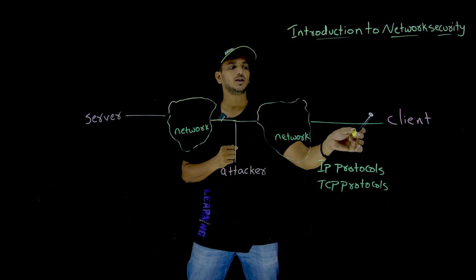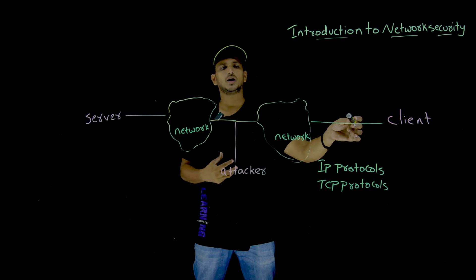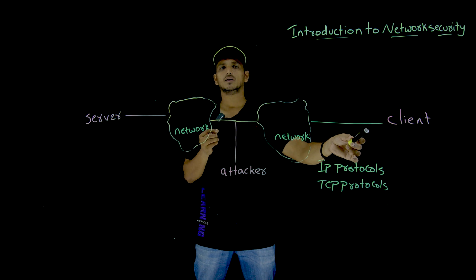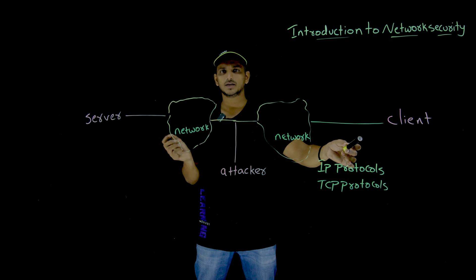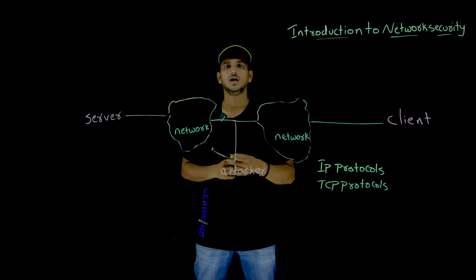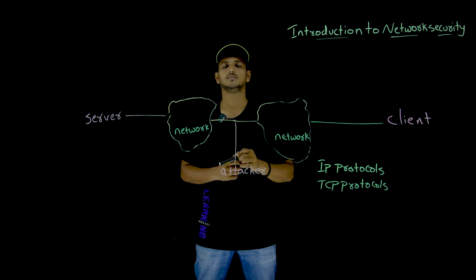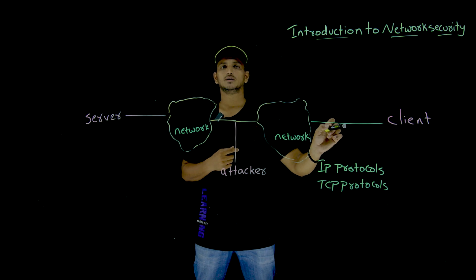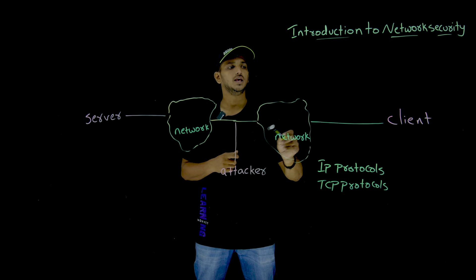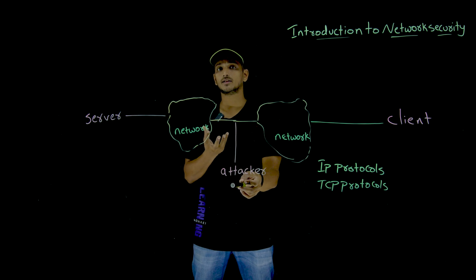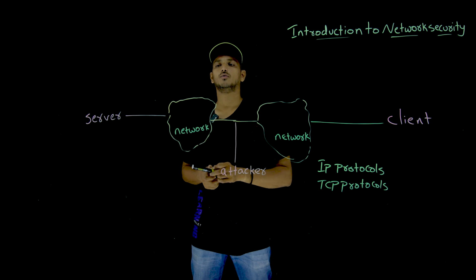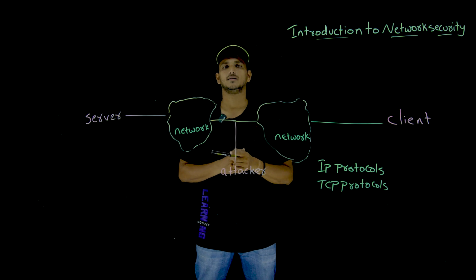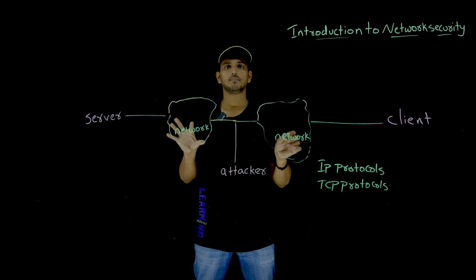Whenever the client is sending a message over the internet, the message is attached with data link layer header, network layer header, TCP layer header, and application layer header. The client information is present inside those headers — the IP of the server, TCP socket number of the client, all this information is present in the headers. If the attacker is able to check that header information, the attacker acts as a client, takes the messages coming from the server, and gives replies as if they are the client.